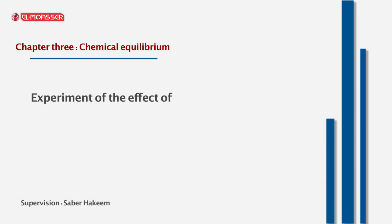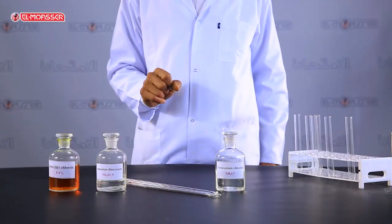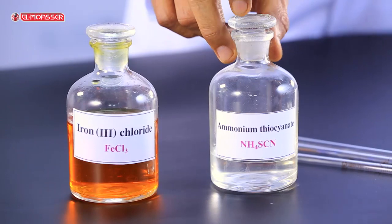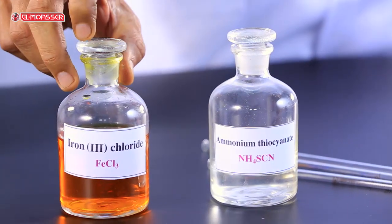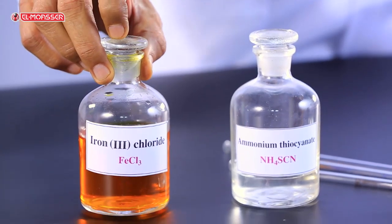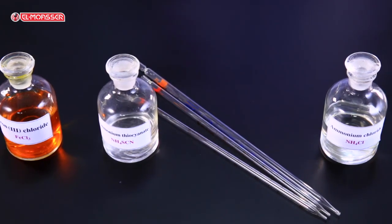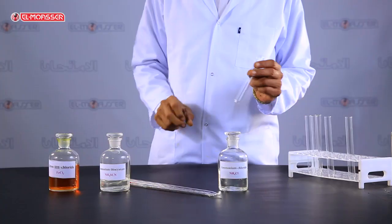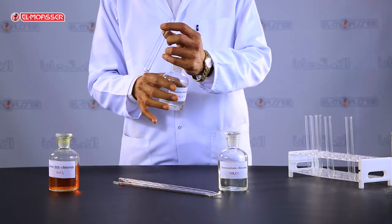Experiment of the effect of concentration of reactants on the equilibrium of a reversible reaction. The reaction of colorless ammonium thiocyanate with pale yellow iron(III) chloride is one of the reversible reactions that can be used to clarify the effect of changing concentration of reactants on the equilibrium of the reaction.